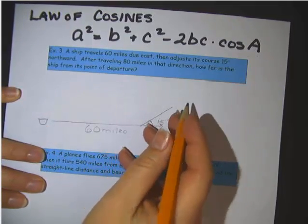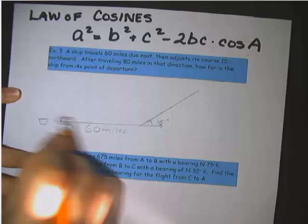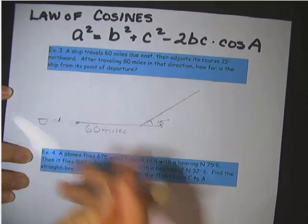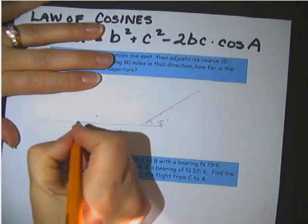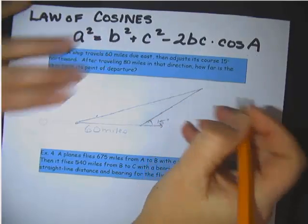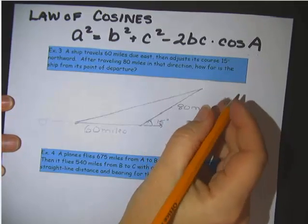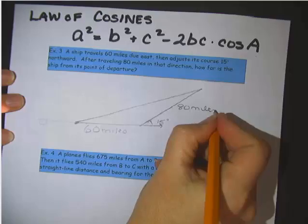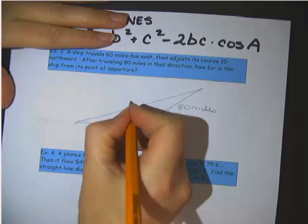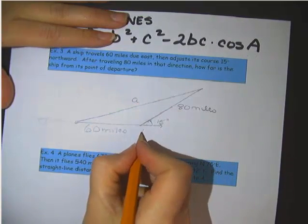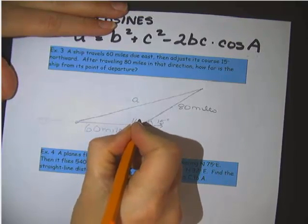Then it continues for 80 miles in that direction, so this will be a good length. I really should make it clearly look shorter than the 60. Let's move our boat over here for the 80. And we end up with this triangle. And our question is, how far is the ship from its point of departure? So we are looking for this distance, and I'm going to call that a. So this is our angle A across from little a, and if this is 15 degrees, of course the angle A will be 165 degrees.